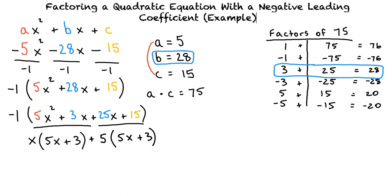When we do this, we need to make sure that our two terms in parentheses are the same. So in our case, we're good because 5x plus 3 and 5x plus 3 are the same.